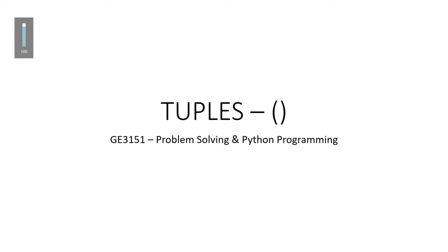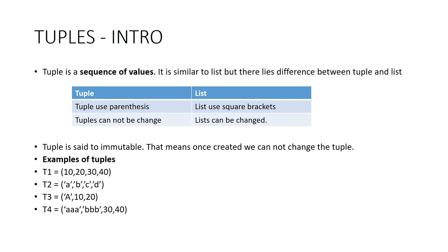Now we are going to see about tuples. Tuples are a sequence of values. It is similar to list but there are differences between tuple and list. Tuples use parenthesis and lists use square brackets. Tuples cannot be changed and lists can be changed.